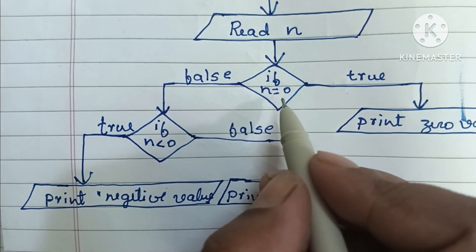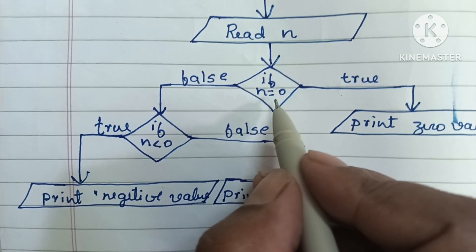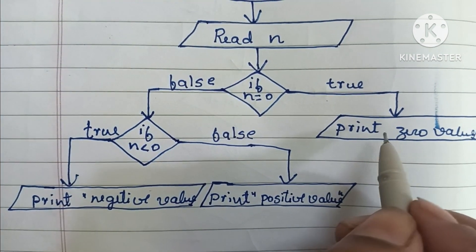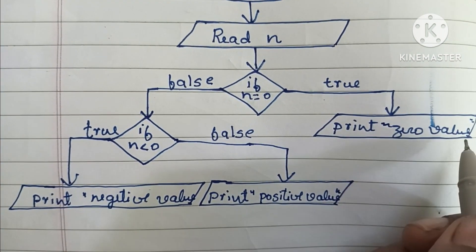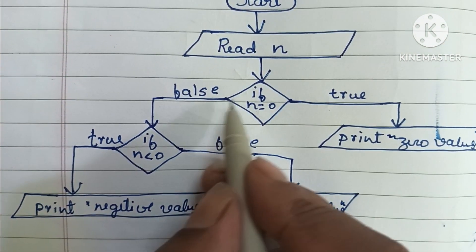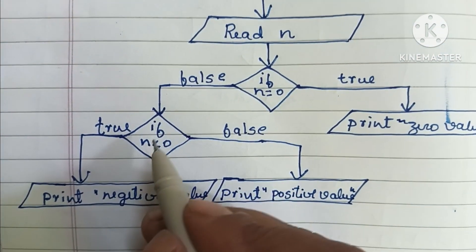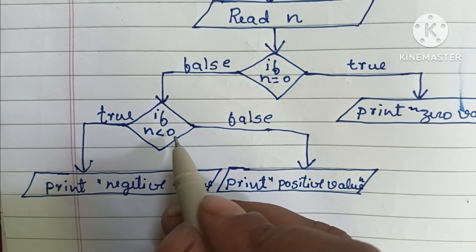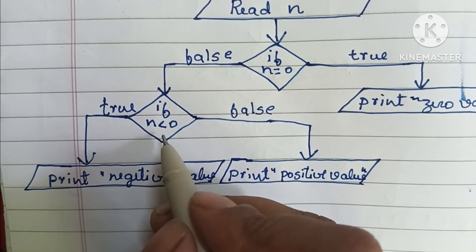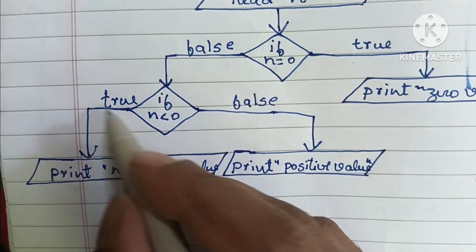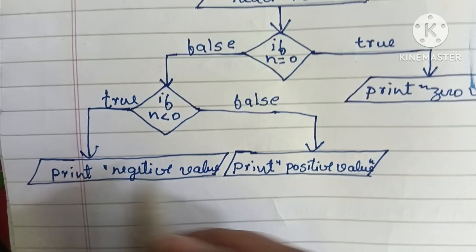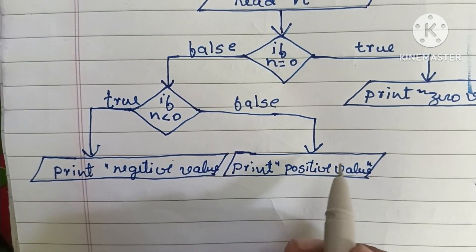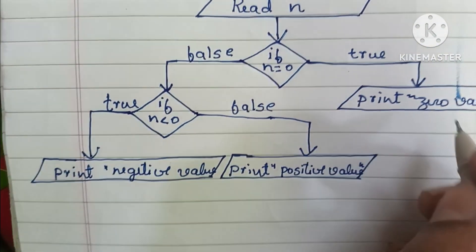To recap: if N equals zero, print zero; if this condition is false, check if N is less than zero — if true, print negative value; if false, print positive value.